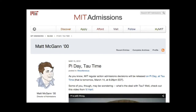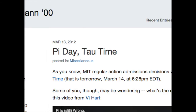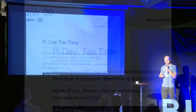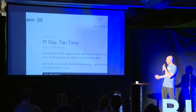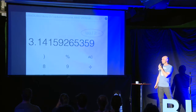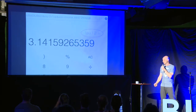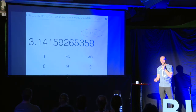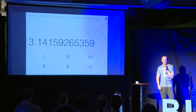MIT changed its admissions release time based on tau — it used to be on Pi Day, now it's on Pi Day at tau time, 6:28 on 3/14. If you type a mathematical expression into Google, it will drop the result into a calculator and evaluate it, and if you evaluate tau over 2, it comes in as 3.14159. Lots of computer programming languages have added tau. It's supported at the Khan Academy and lots of other places.